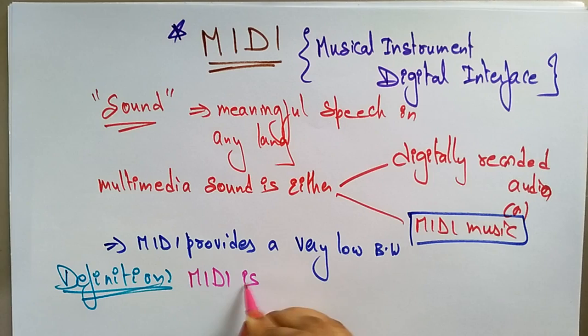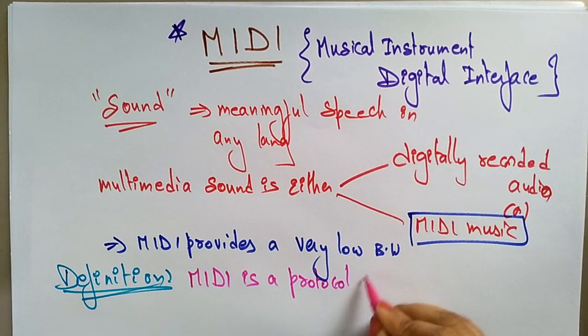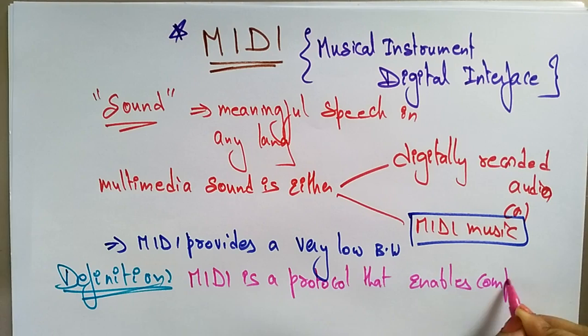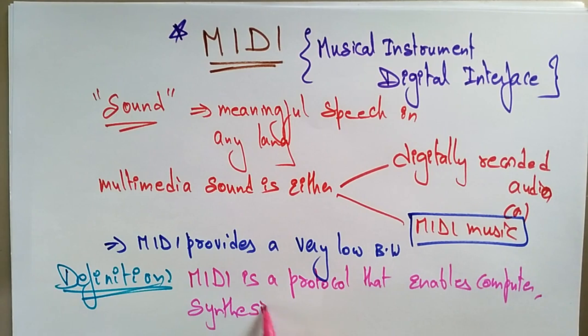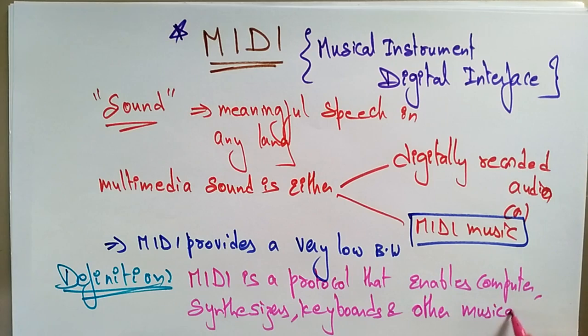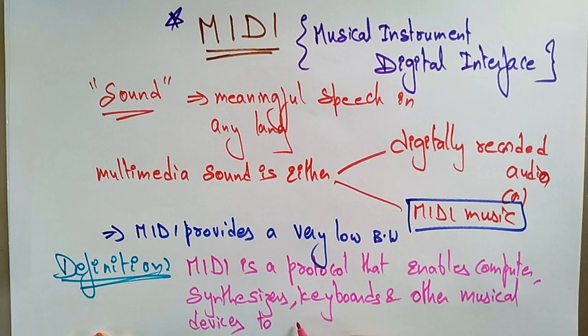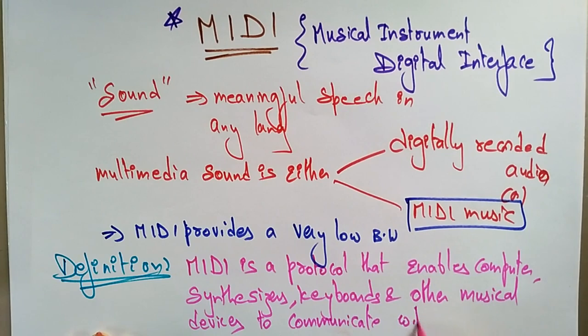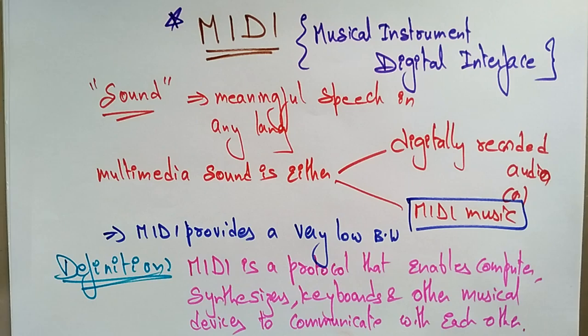The definition of MIDI: MIDI is a protocol — Musical Instrument Digital Interface is a protocol that enables computers, synthesizers, keyboards, and other musical devices to communicate with each other.